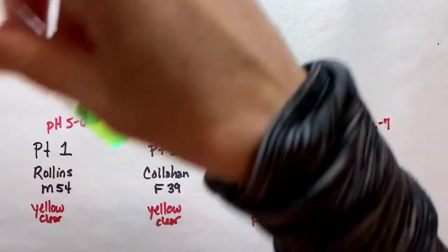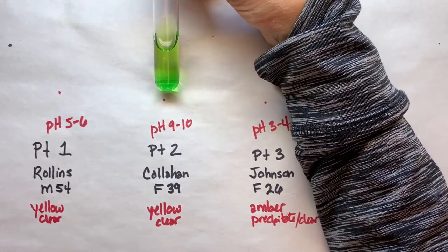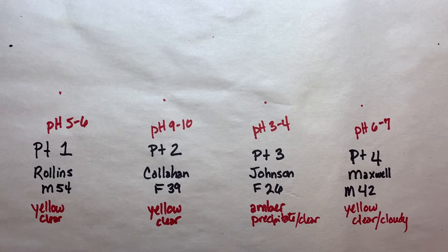Let's look at patient number two, Callahan, also green, that's a negative for protein. So if it's green, that's a negative for protein just like it is negative for sugar in Benedict.